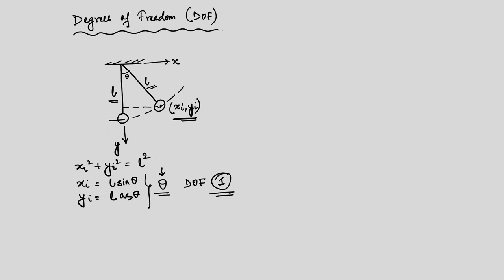Because the string is inextensible, we can develop a relation between xi and yi. Therefore, we need only the single parameter theta to define the deformed shape — this is one degree of freedom. Although xi and yi are two coordinate components, the constraint means only one independent parameter is needed. If the length were not constant, we would need both xi and yi and would have two degrees of freedom.